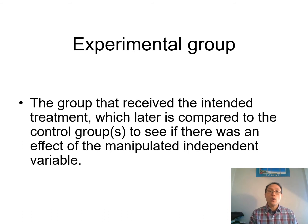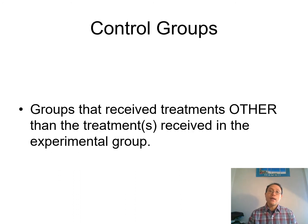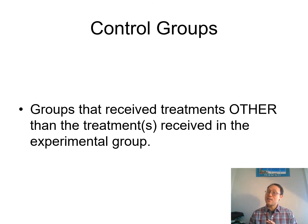The experimental group is the group that received the intended treatment, as opposed to a control group that received no treatment. When you think about the control group, you might think it's the group that received nothing — but that's not the case, because there are various forms of controls. Today we're going to talk about all these various forms. These are groups that received treatment other than the treatment received in the experimental group.